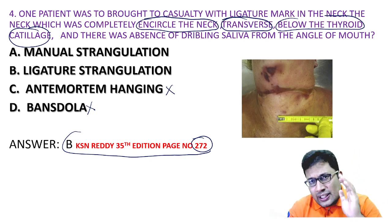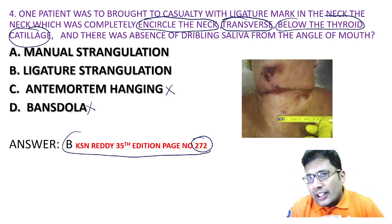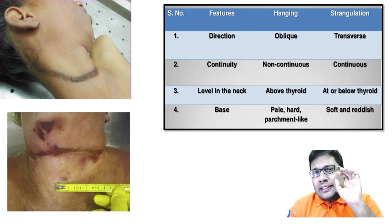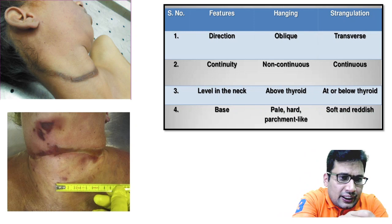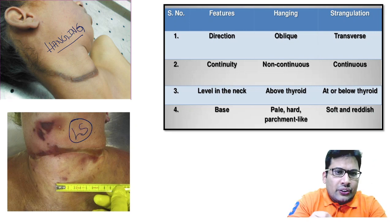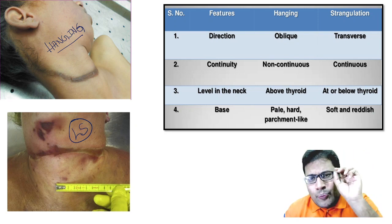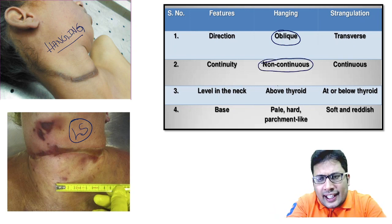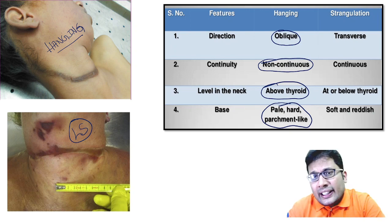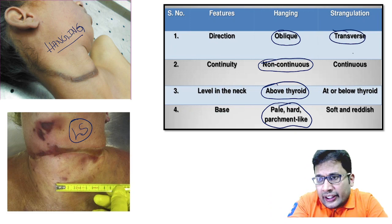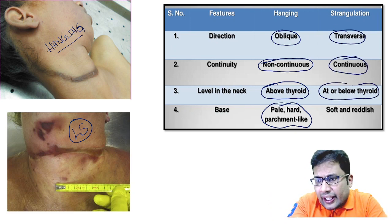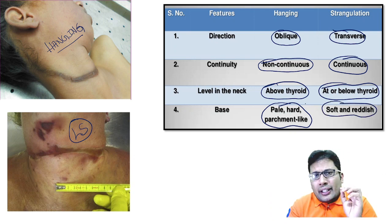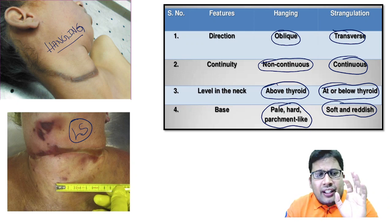Let us see the difference between hanging and ligature strangulation. In hanging: the direction is oblique, it is incomplete (non-continuous), it is above the thyroid, and the base is pale, hard, and parchment-like. In ligature strangulation: it is transverse, continuous, at or below the level of the thyroid, and the base is soft and reddish. In case of throttling (manual strangulation), the ligature mark is absent — instead there will be finger bruises.